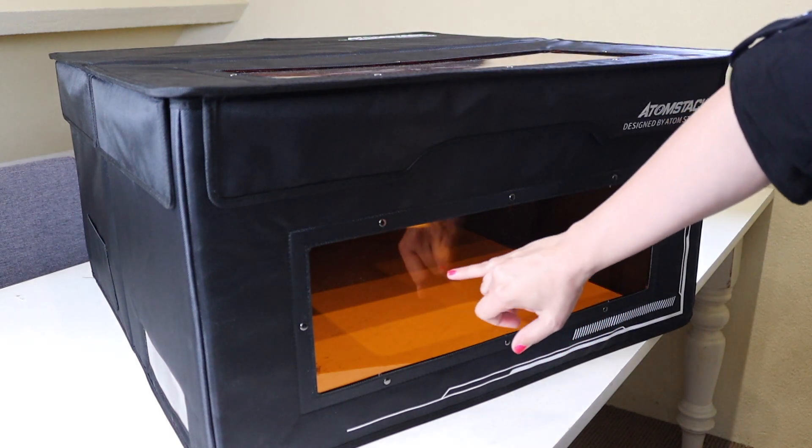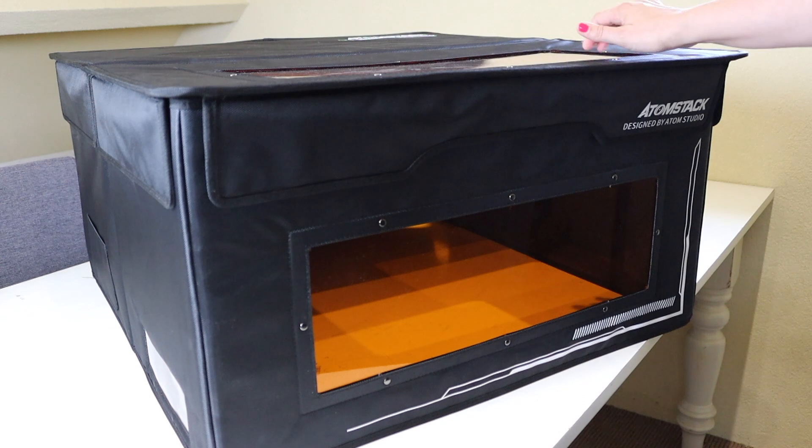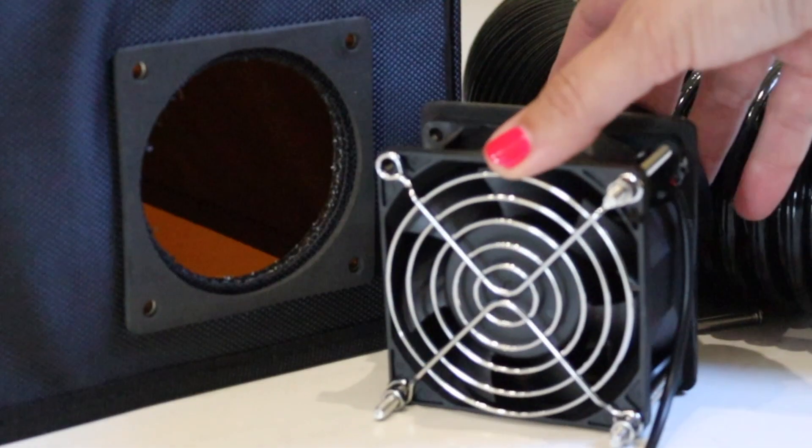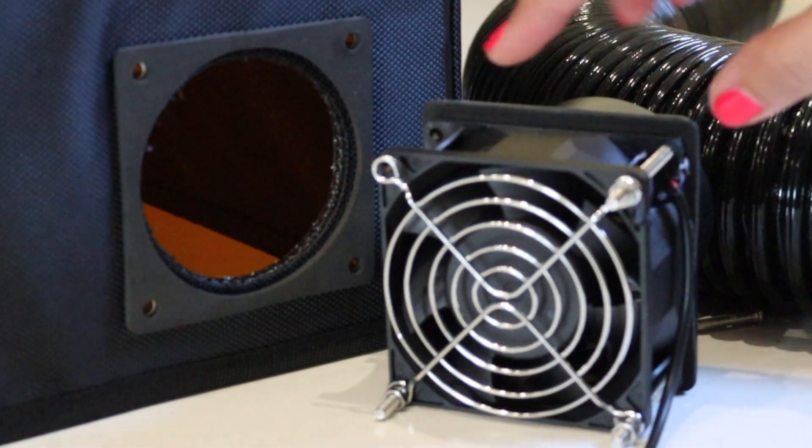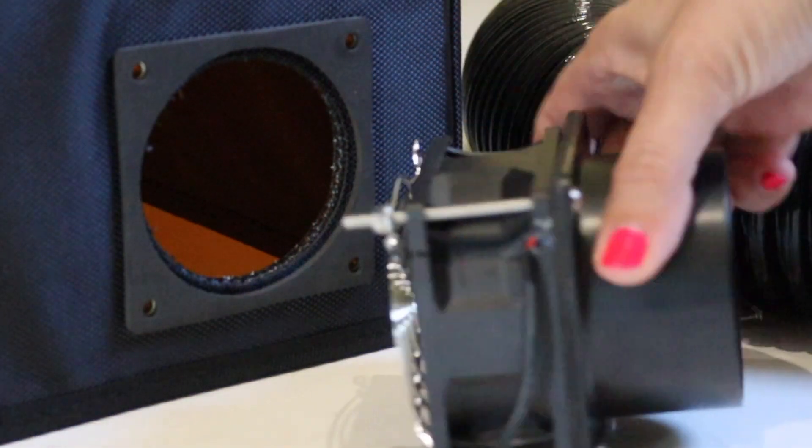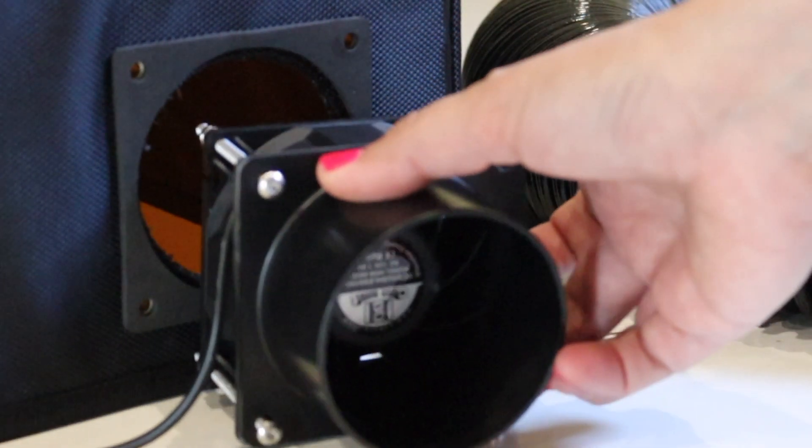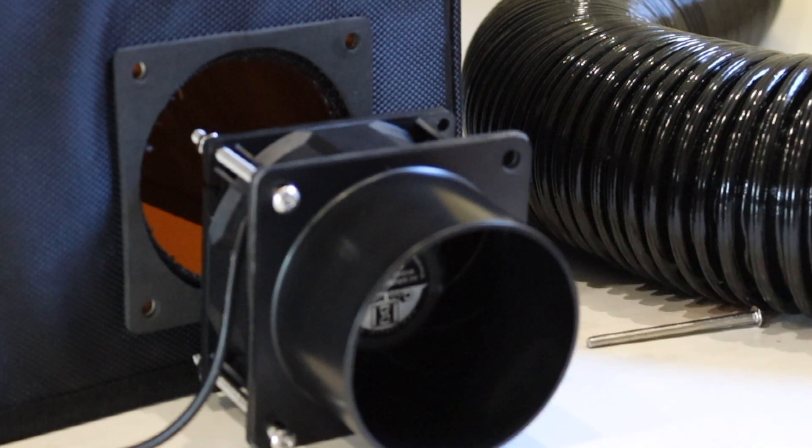I really like that you can still see what is happening through these windshields. And connecting everything is quite simple - all we have to do is place this one on here and then we connect the hose right there.